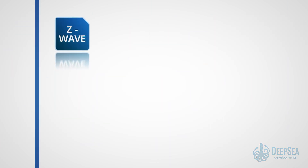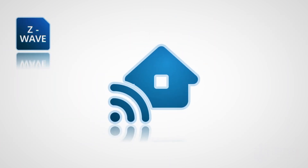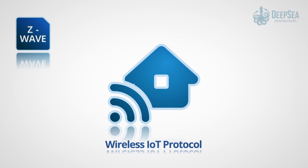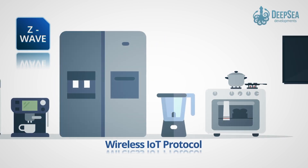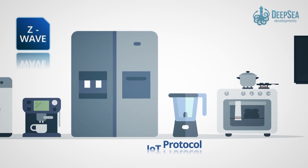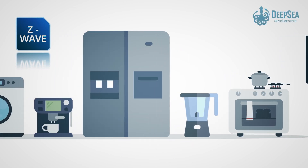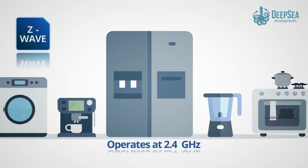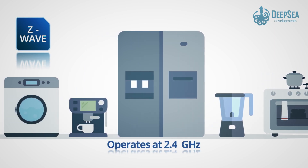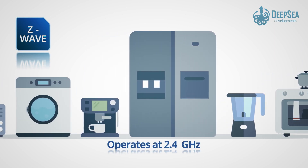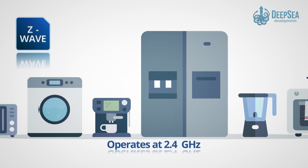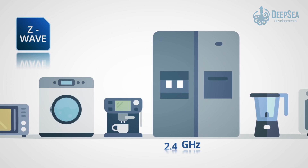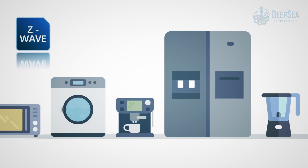And finally, Z-Wave. This wireless IoT protocol is gaining popularity. It is mainly used for IoT devices used at homes and it operates on 2.4 GHz. It uses low-energy radio waves to communicate.